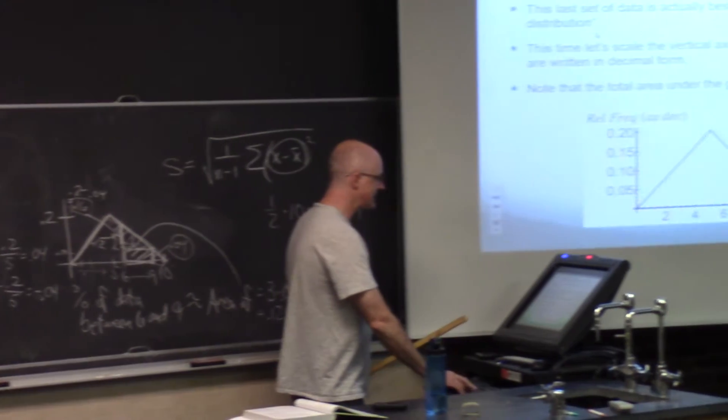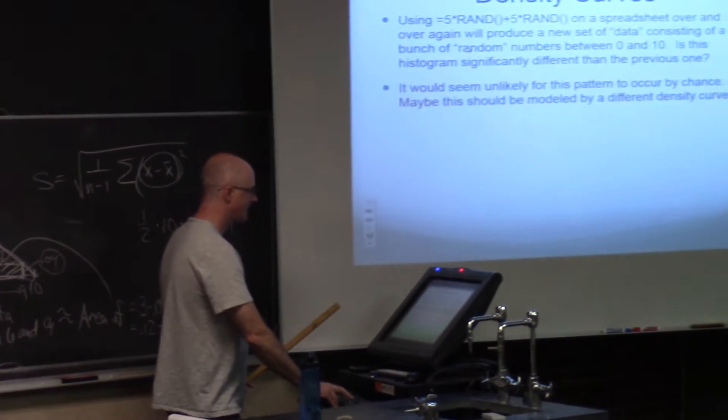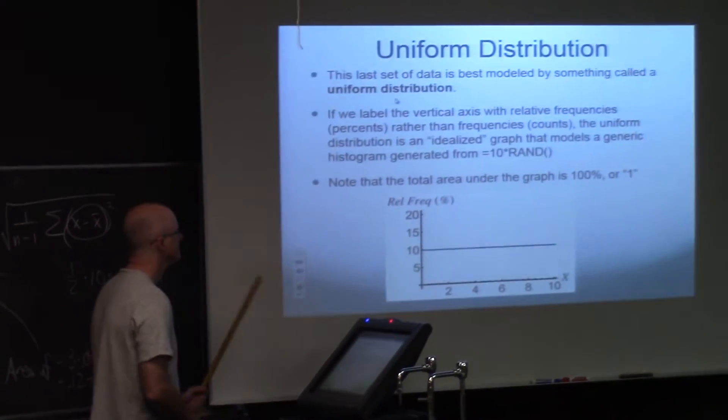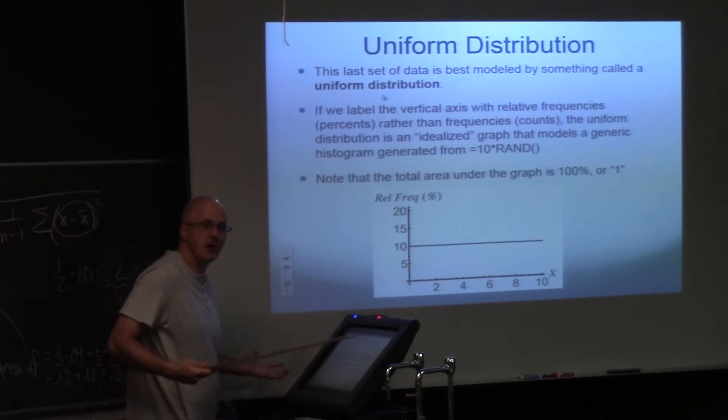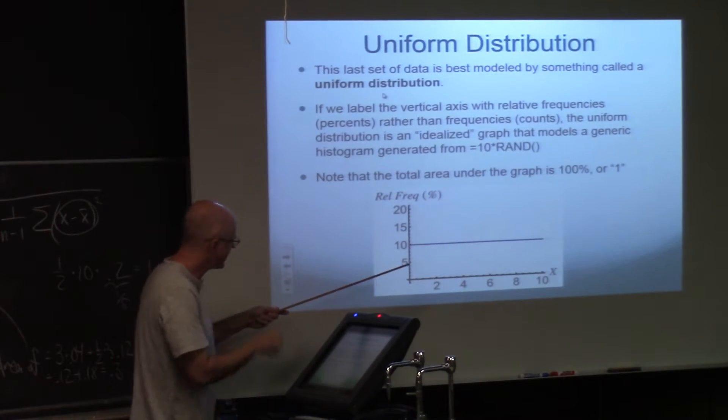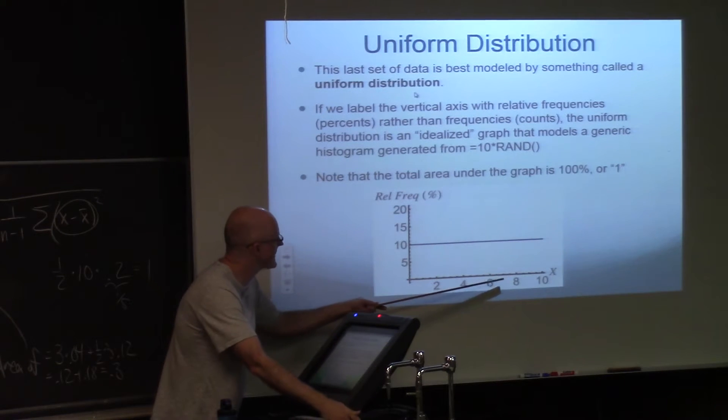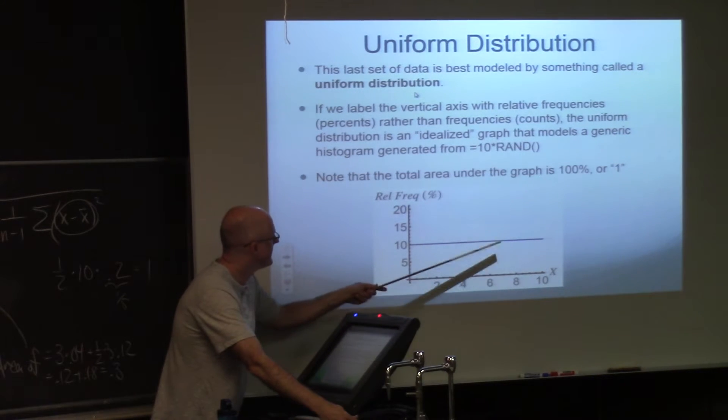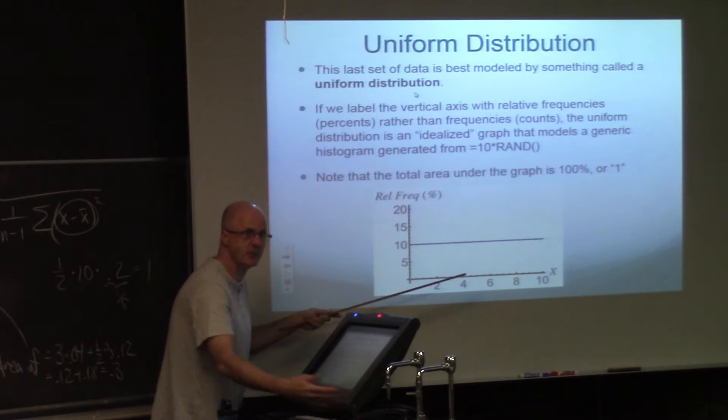For uniform distributions, the area is easy. It's always the area of a rectangle. So the percentage of the data, for example, in this kind of situation, that's between, say, four and seven, is the area under the curve between four and seven, which is the area of a rectangle.